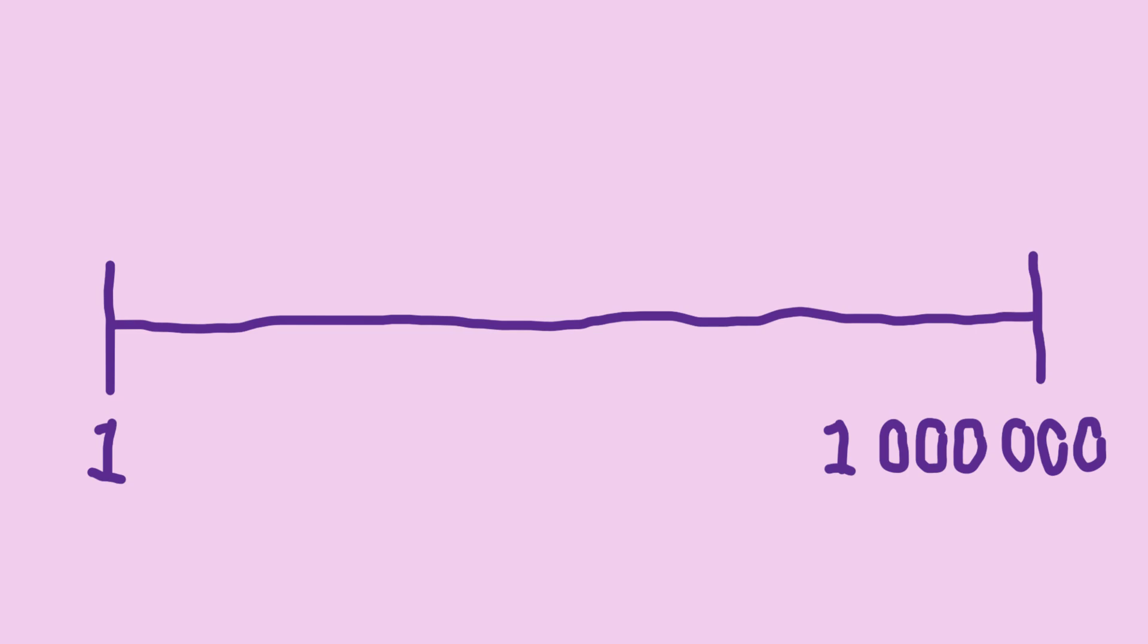Here is the number line from 1 to a million. Where would you put a thousand? Well, it is true that the difference between a million and a thousand is much bigger than the difference between a thousand and one. But in some sense, a thousand feels like it belongs somewhere near the middle.